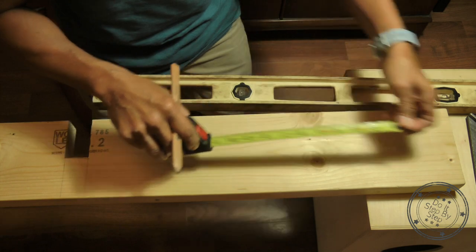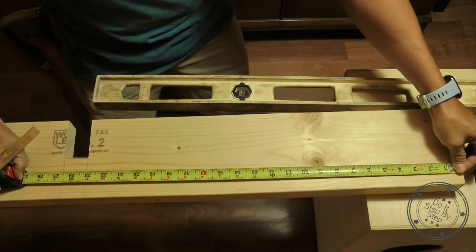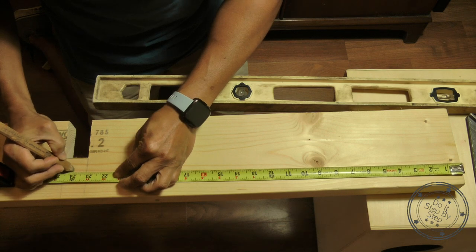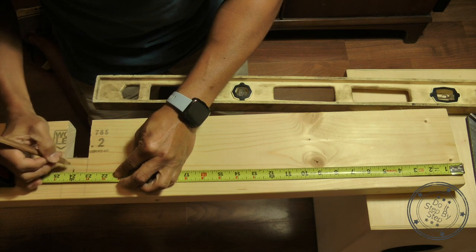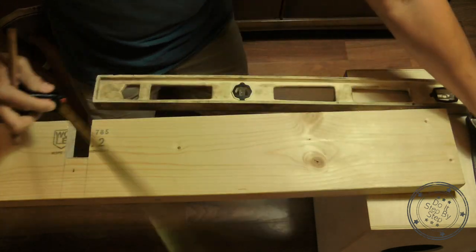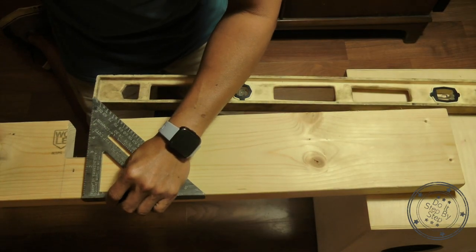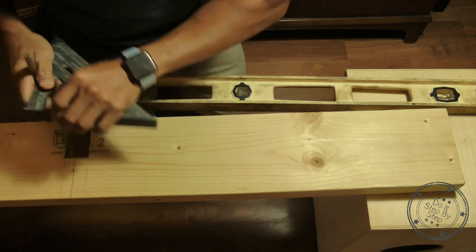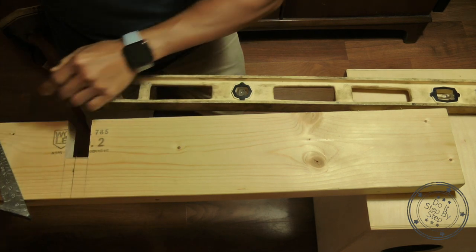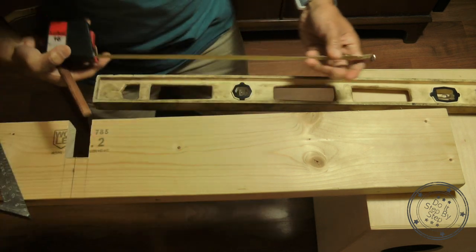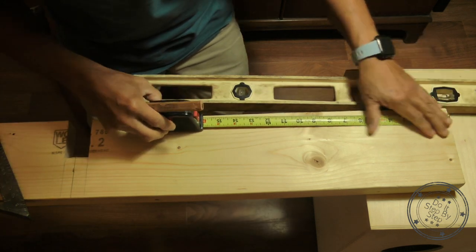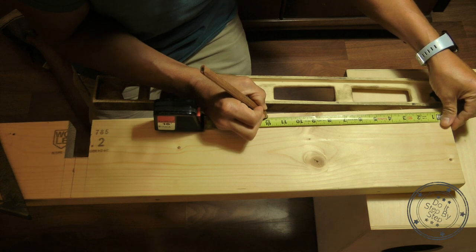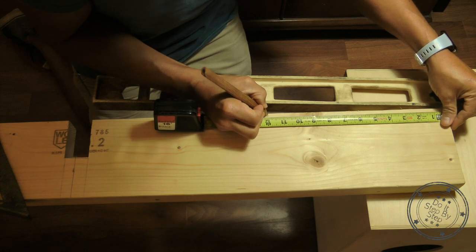What you need to do is measure two feet for your base support. For each base support will be two feet. And then you need to find the center, which is one foot. And this is going to be the top of the base support.